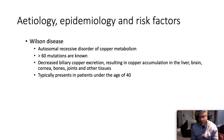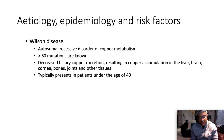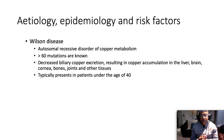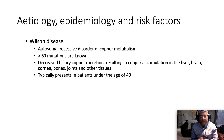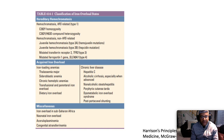Wilson disease is also an autosomal recessive disorder of copper metabolism. More than 60 mutations are known. Decreased ability for copper excretion results in copper accumulation in the liver, brain, cornea, bones, joints, and other tissues. It typically presents in patients below the age of 40.